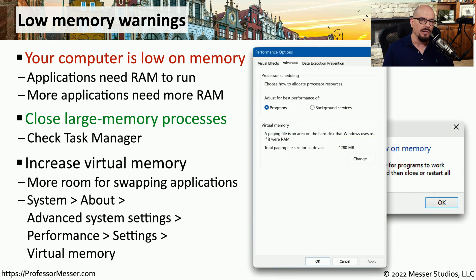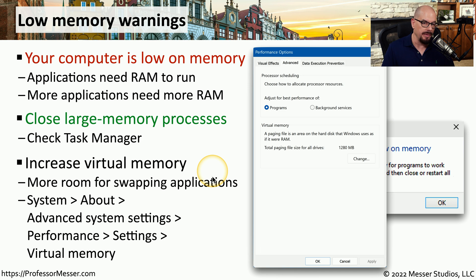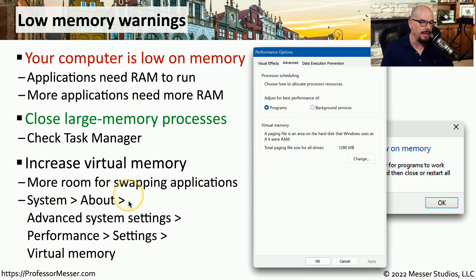Windows also has a way to take information that's in memory and temporarily move it off onto your storage drive. Windows refers to this as virtual memory, and you can change the virtual memory settings in your system under About, Advanced System Settings, Performance, Settings, and Virtual Memory.